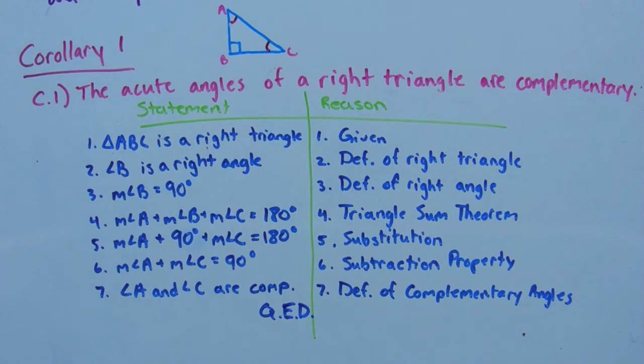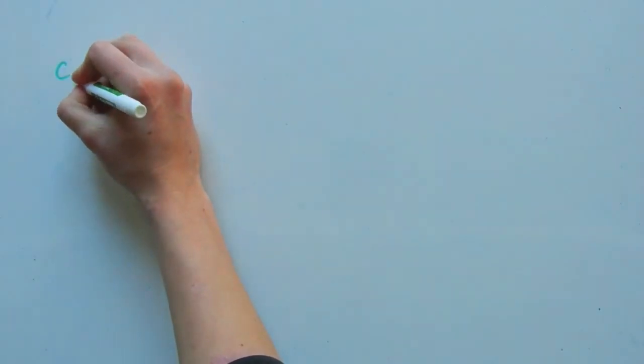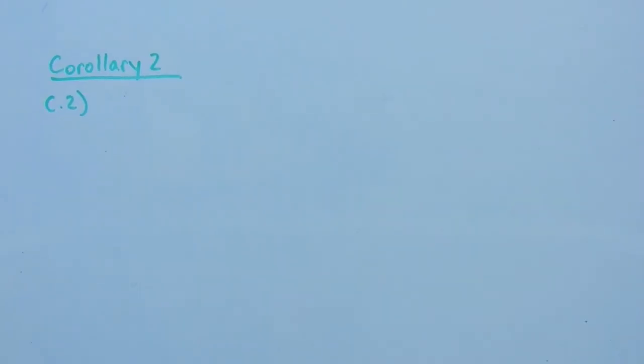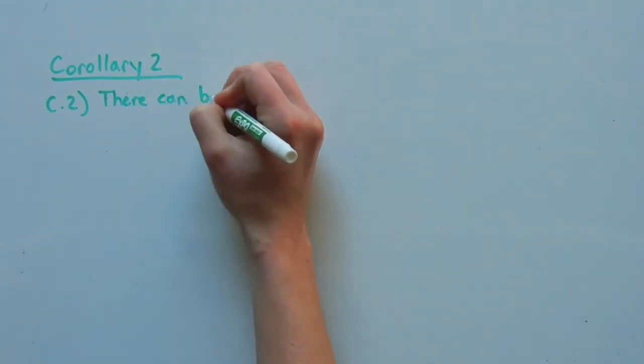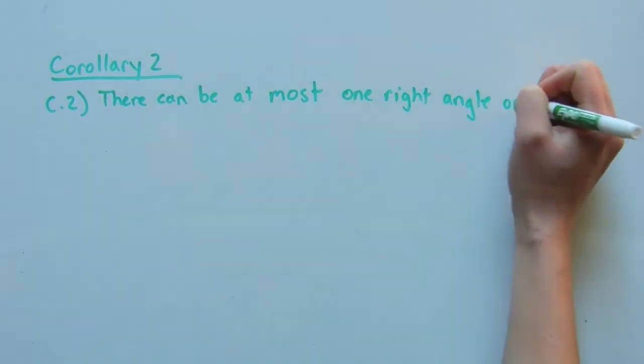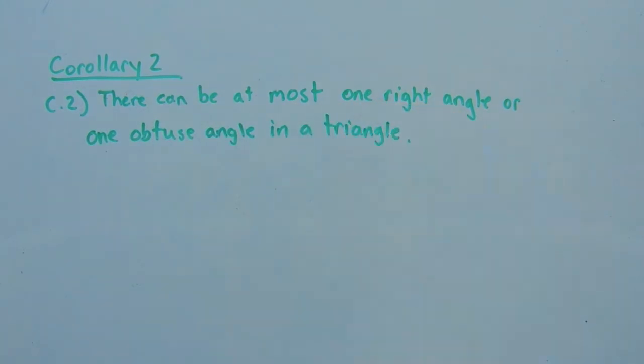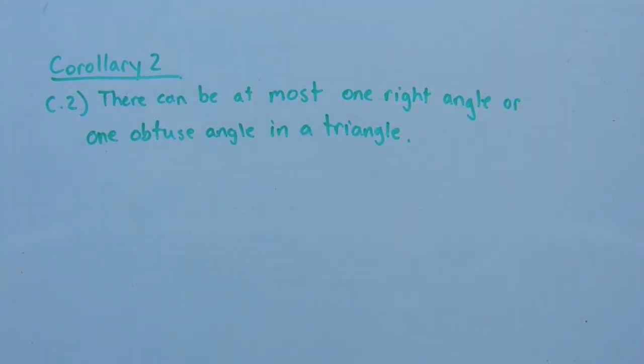Let's go over one more corollary. Corollary 2, or C2, says there can be at most one right angle or one obtuse angle in a triangle.